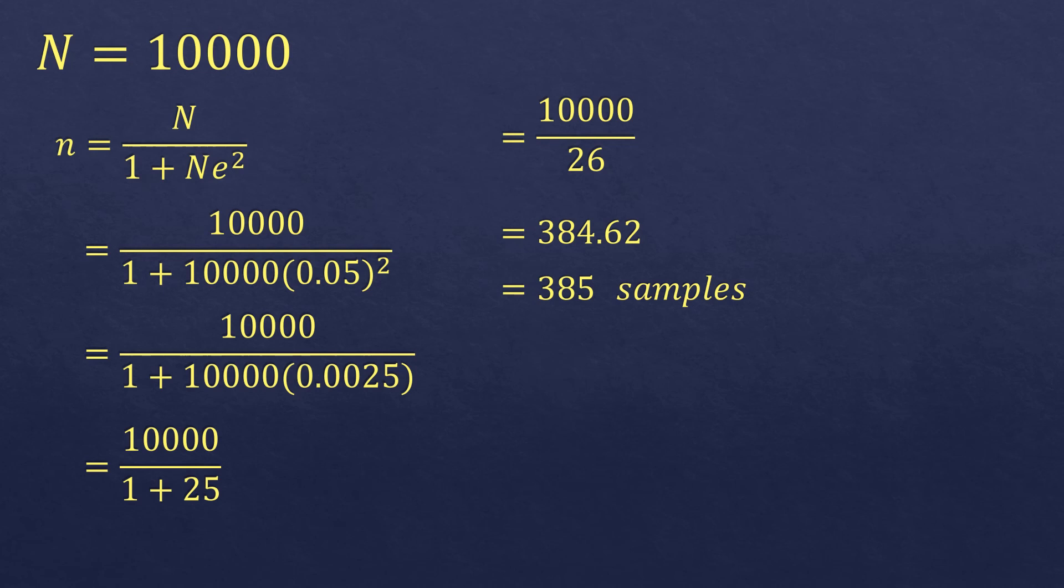So basically, for a safe research, if there is a big population size, you use a sample size of 400 because that will be safe. As long as you distribute this 400 to have a fair distribution or proportion.